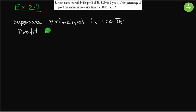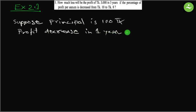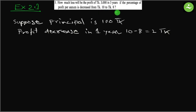Profit decrease in one year: 10 minus 8 equals 2 taka. Because the rate changes from 10 to 8, the profit decreases by 2 taka per year.